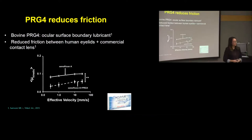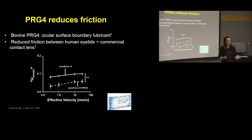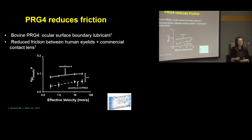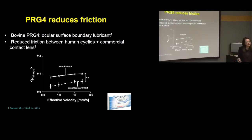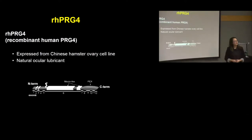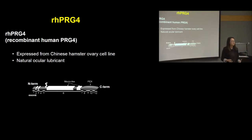In our lab, we've shown that PRG4 is an effective ocular surface boundary lubricant. Previous work by PhD student Michael Sampson showed that PRG4 reduces friction between human eyelids and commercial contact lenses — comparing AccuView Oasis with and without PRG4, lenses without PRG4 had significantly higher friction. We've recently been able to receive recombinant human PRG4 expressed from Chinese hamster ovary cells, which is important because it can now be used clinically in humans.